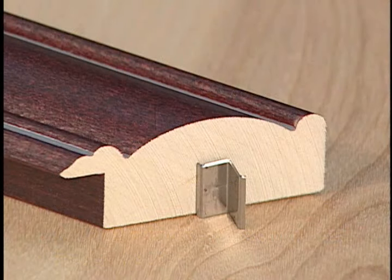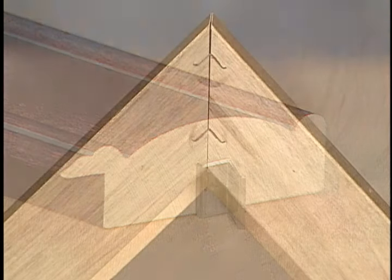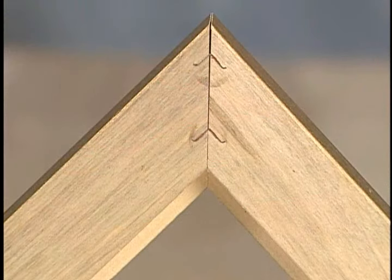The height of the v-nail to be used should not exceed the height of the molding. Driving a v-nail one half to three quarter the height of the molding is usually sufficient. Space nails approximately one quarter to a half inch apart.